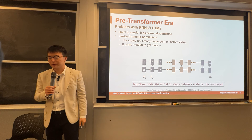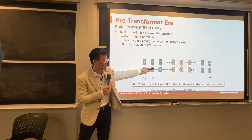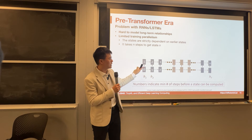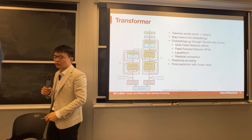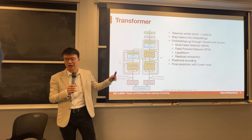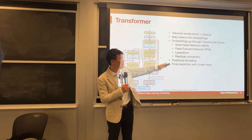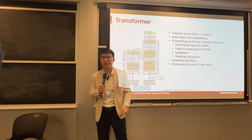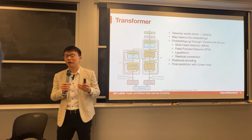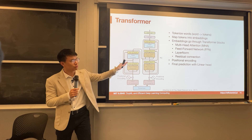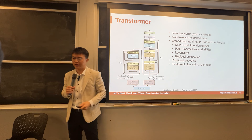The number here means the steps before a state can be computed — it propagates diagonally: zero steps, one step, two steps, three steps. To solve these limitations, they built the transformer. This is the basic architecture of the transformer published in 2017. We will cover different components: tokenizer, how to map tokens into embeddings, the transformer block including multi-head attention, fully connected layer, layer norm, residual connection, positional encoding, and the final prediction with a linear head.